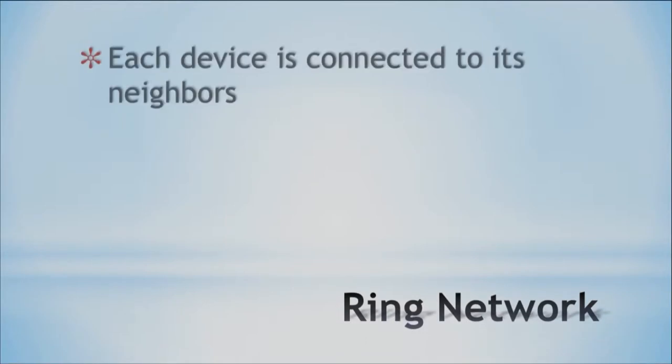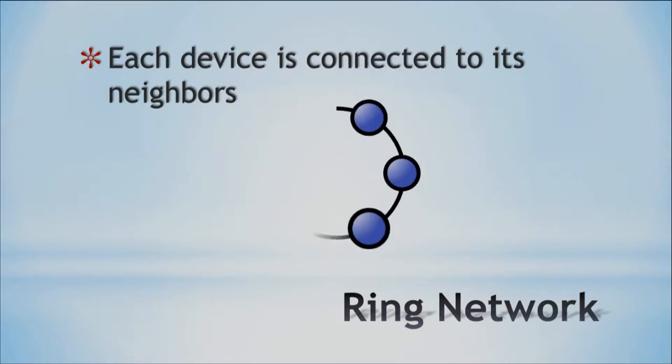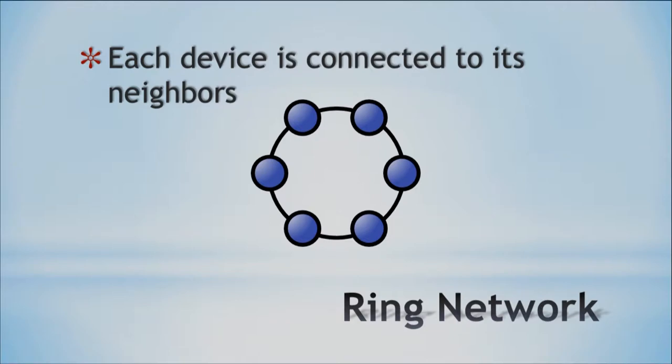We also have the ring topology. In the ring network, each device is connected to its neighbors. The blue dots are our devices, and you can see that each device is connected to both of its neighbors. Unlike the bus, the ring topology doesn't really have a beginning or ending — it's a complete circle. You can't tell where it starts or where it ends, and each device is connected to its neighbors within the ring.